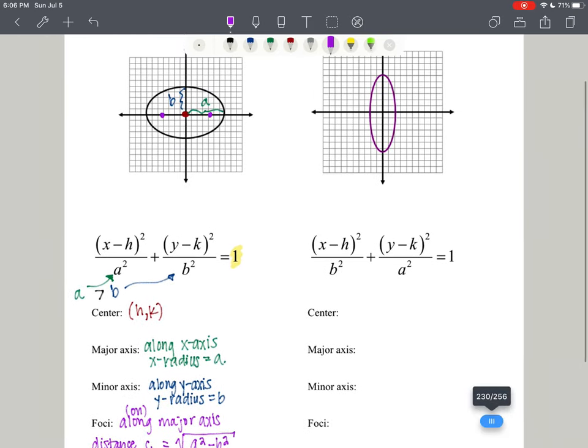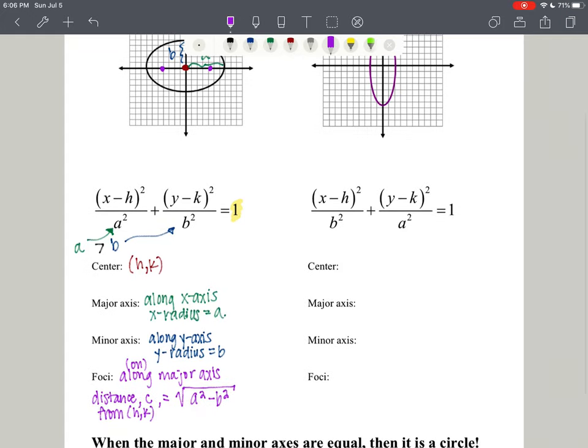Now if we happen to be vertically long, then your a, which is going to be greater than b, is going to be the denominator for the y variable. So again here, a is greater than b. The center is still going to be at (h, k).